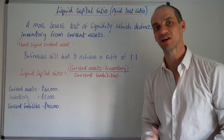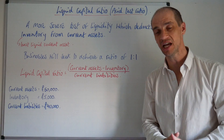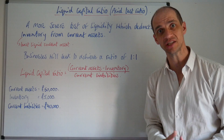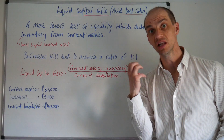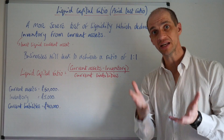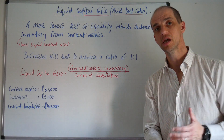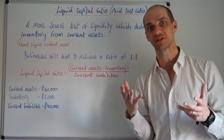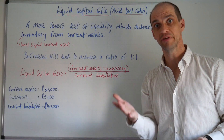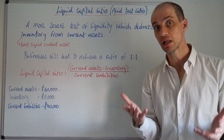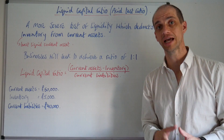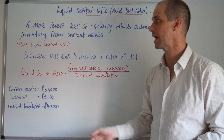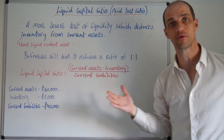Let's take a look at the acid test ratio, also known as the liquid capital ratio. This is a more severe test of liquidity because it deducts the least liquid current asset, that is stock or inventory. Stock needs to actually be turned into sales to transfer into cash, so inventory is clearly the least liquid current asset. This more severe test of liquidity deducts inventory from current assets.